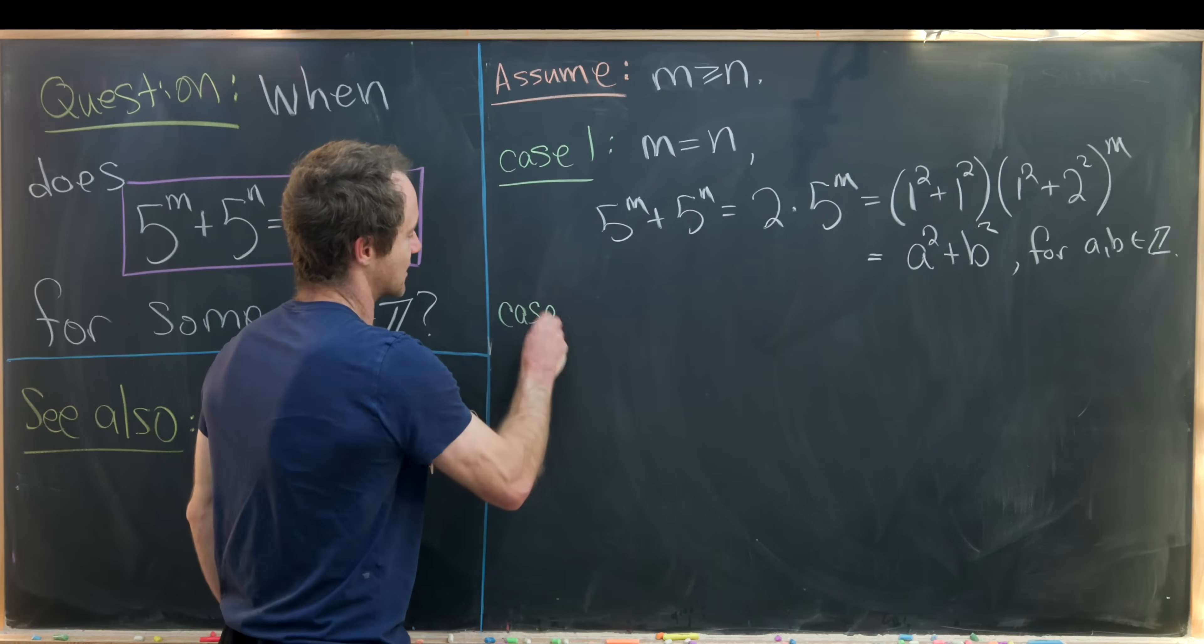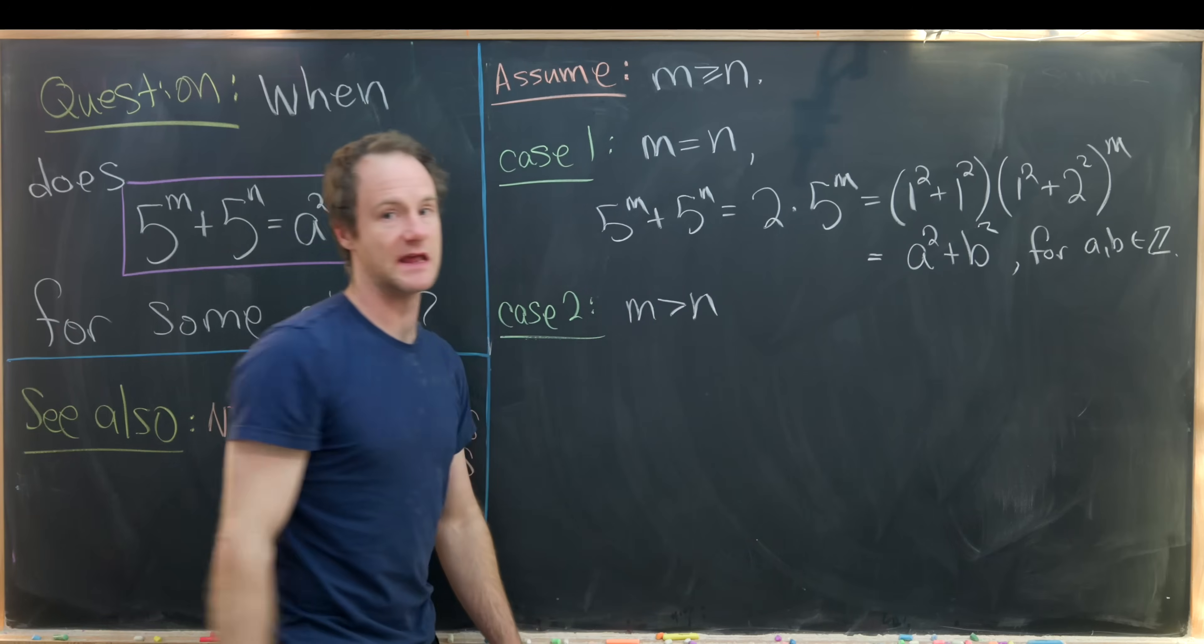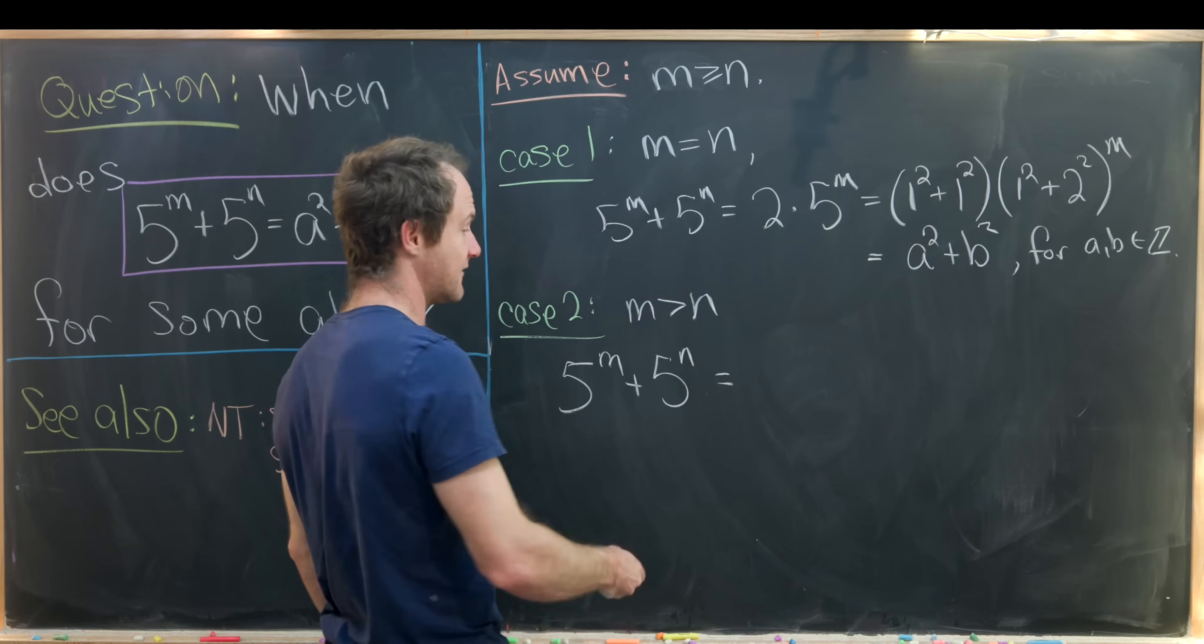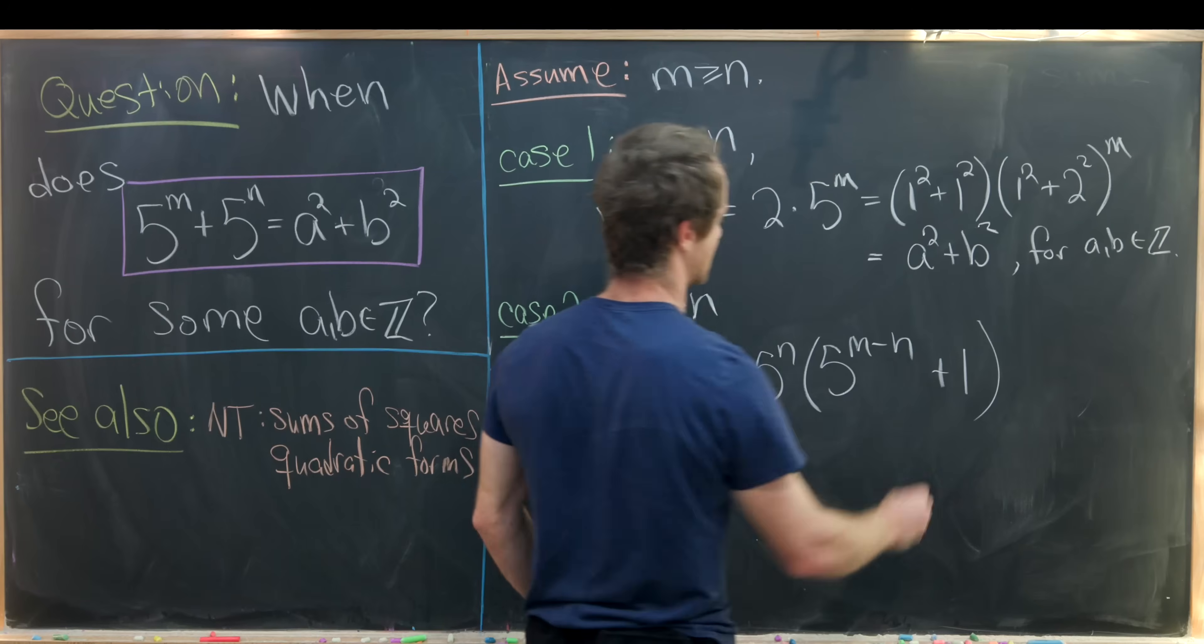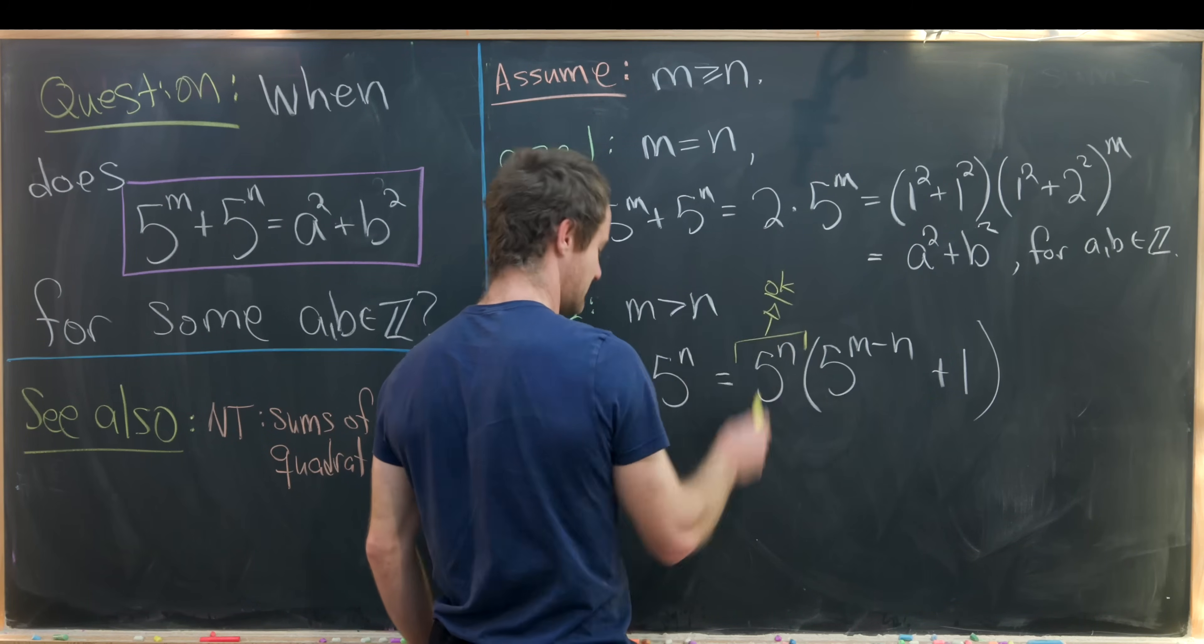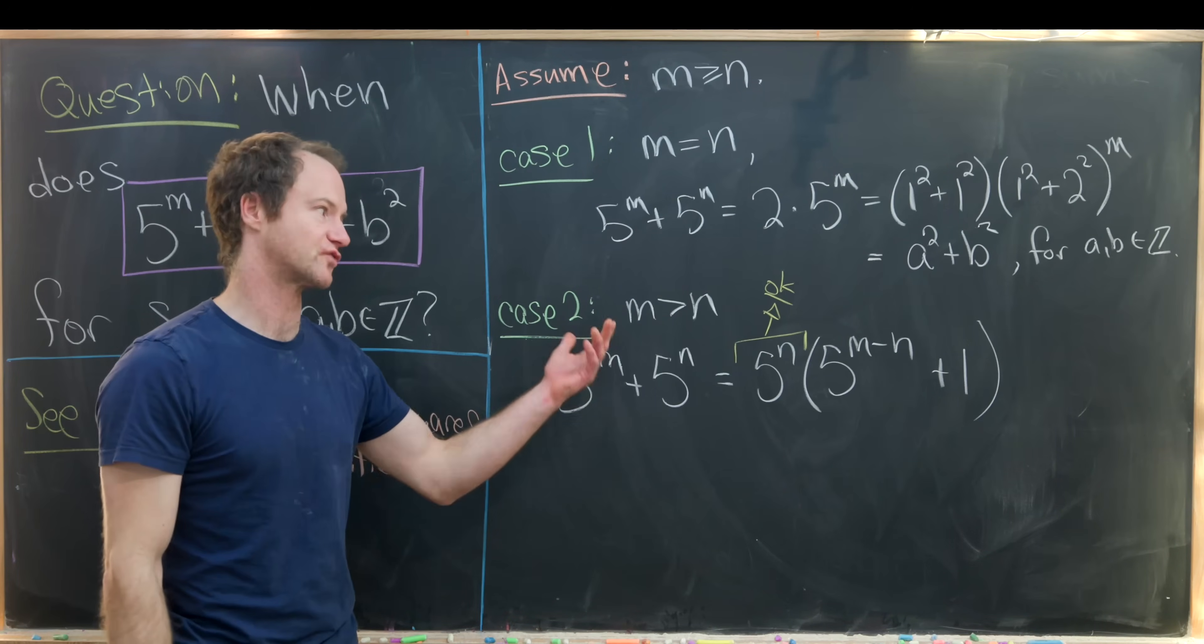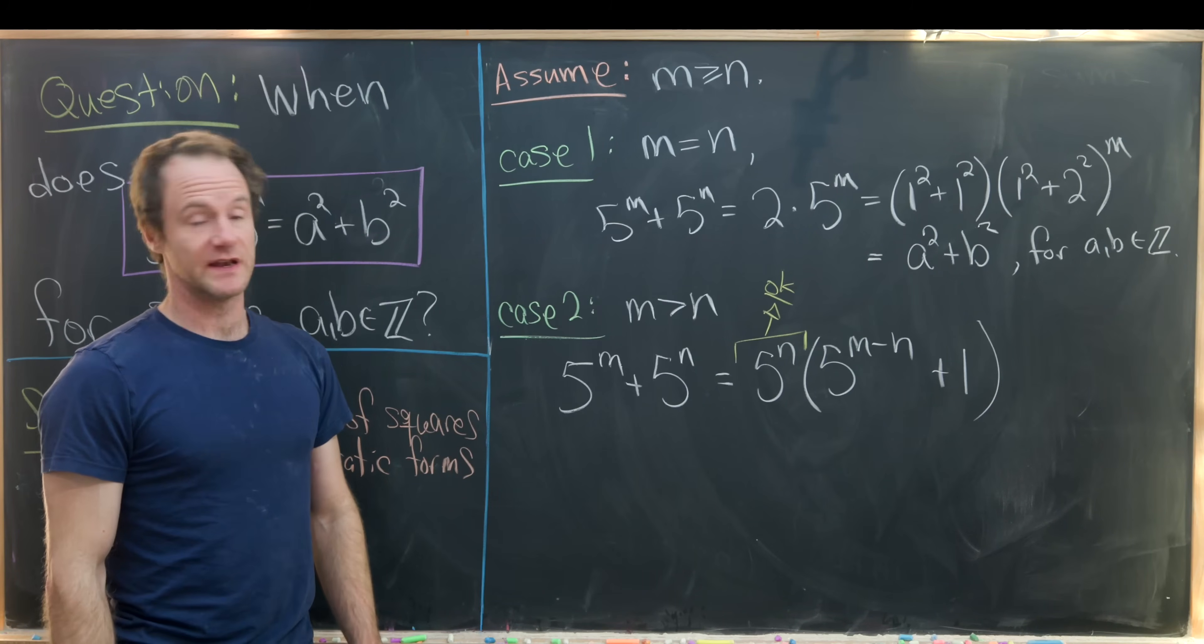So now let's move on to our second case which will be the case when m is strictly bigger than n. And in this case we can do a little bit of factoring. So we can take 5 to the m plus 5 to the n and factor it as 5 to the n times 5 to the m minus n plus 1. I'll just write that this term right here is okay. And what I mean by okay is it can be expressed as the sum of two squares. We expressed it as the sum of two squares over here already and we're just raising that to the nth power. So we know that by our proposition can also be written as the sum of two squares.